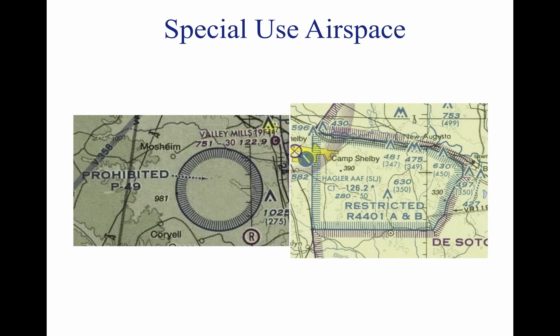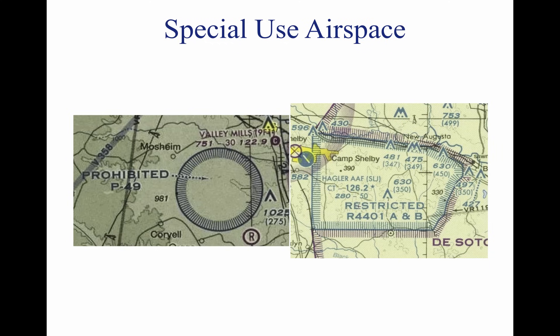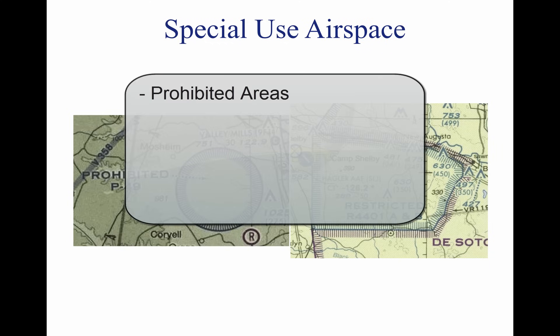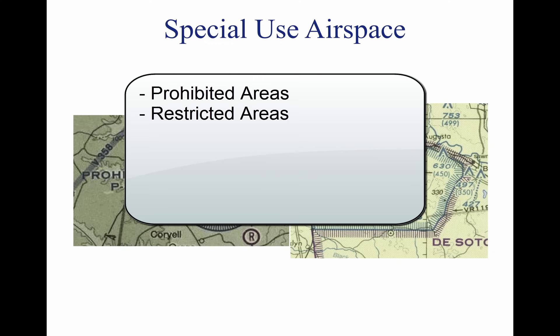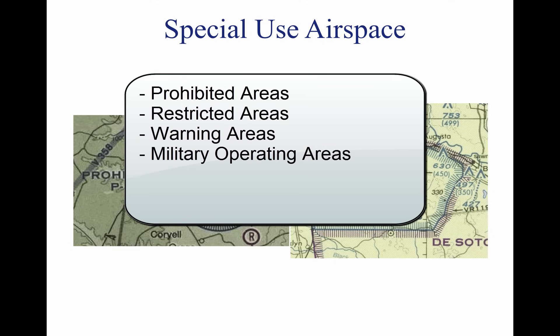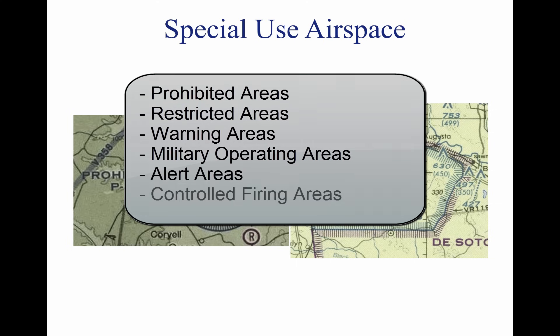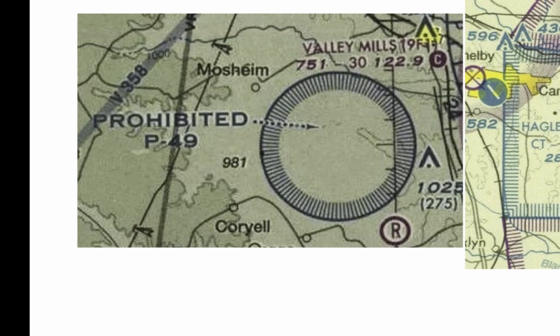Special use airspace is any airspace where certain activities must be confined, or where limitations may be imposed on aircraft operations that are not part of those activities. These can include prohibited areas, restricted areas, warning areas, military operating areas, alert areas, and controlled firing areas. The picture on the left illustrates a prohibited area.